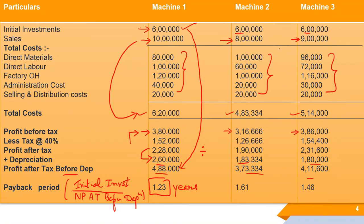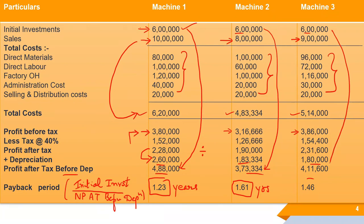For Machine 2: 6,00,000 ÷ 3,73,334 = 1.61 years. For Machine 3: 6,00,000 ÷ 4,11,600 = 1.46 years. So we now have payback periods for all three machines.